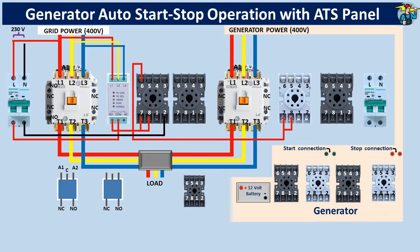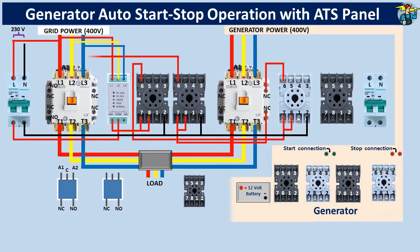Number 7 should also be connected to common port number 8. The neutral line on the grid side is connected to number 2 of the relay. Output port number 6 will go through the normally closed auxiliary contact points of the generator side contactor to port number 7 of timer number 2. Number 7 is connected to common port number 8. The neutral line on the grid side is connected to number 2. Output terminal number 6 is connected to the A1 coil end of the mains contactor. The neutral line on the mains side is connected to coil end A2. On the generator side, bring a phase line to the double pole breaker.